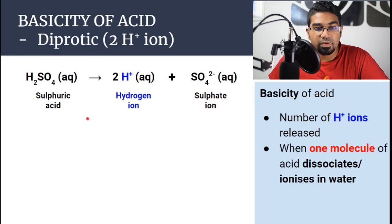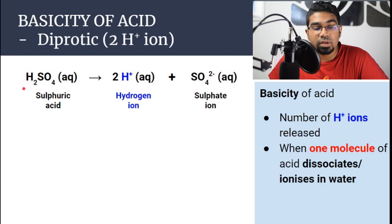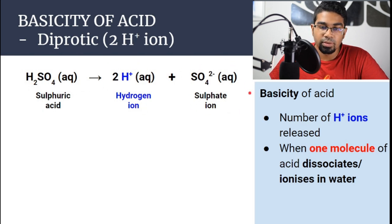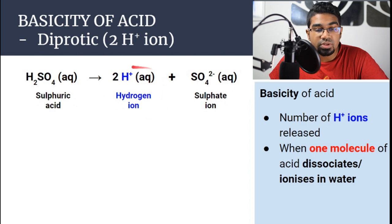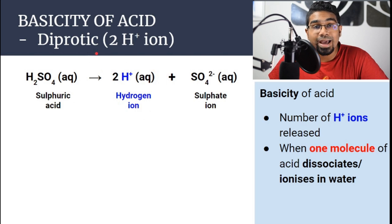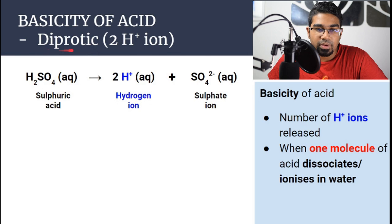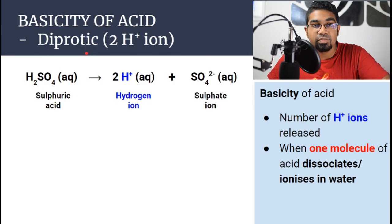Let's look at sulfuric acid. Sulfuric acid has two hydrogen ions, and when dissolved in water, sulfuric acid will release two hydrogen ions and sulfate ion. We are concerned with how many hydrogen ions are released by a single molecule of the acid. Since two hydrogen ions are released, sulfuric acid is a diprotic acid or dibasic acid. Diprotic means di for two.